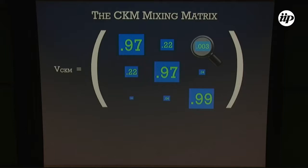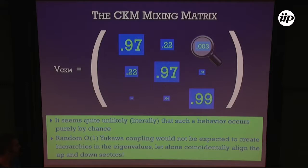The two left-handed matrices don't need to be small individually, but they must be very closely aligned. It seems extremely unlikely, in a literal sense, that such alignment occurs purely by chance — even if you construct a Yukawa matrix with the right eigenvalue hierarchy. The up and down sectors would have to know a great deal about each other.